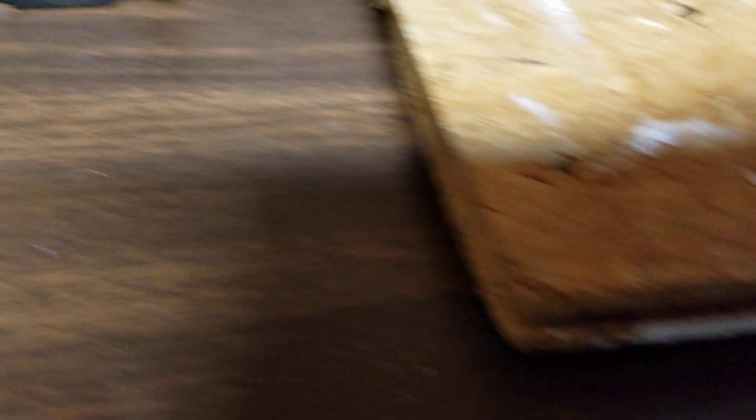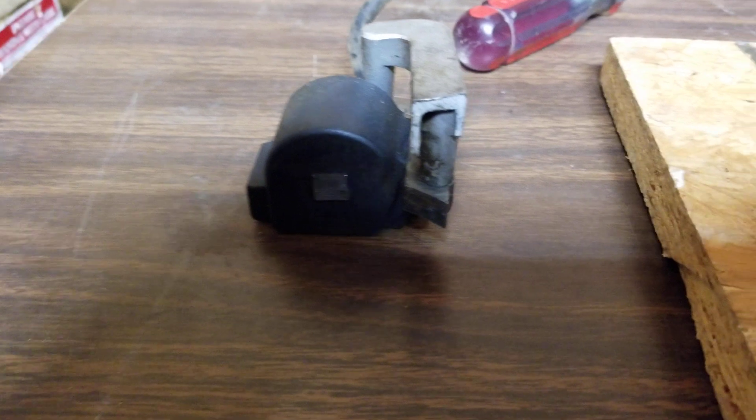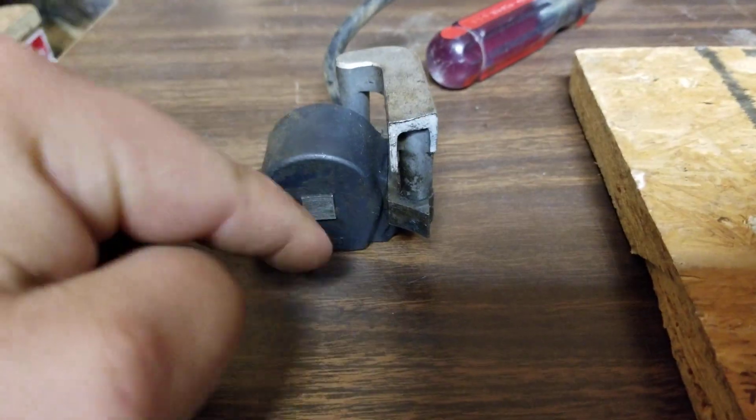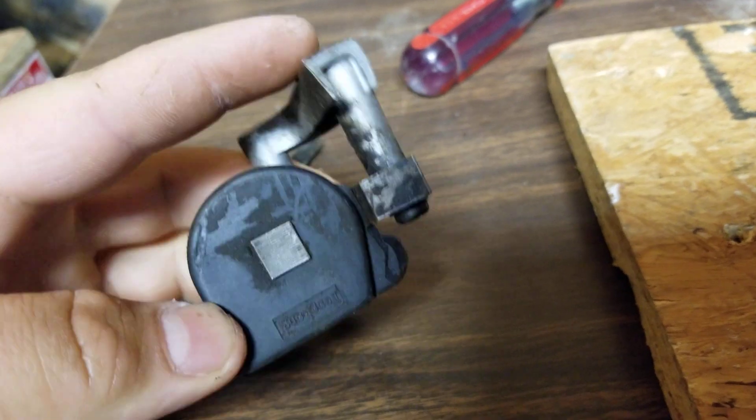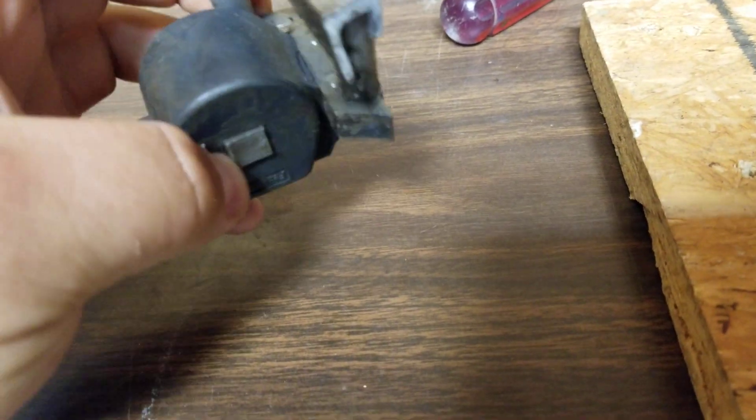There we go. And so if you notice, on an old school traditional ignition coil, it's set up the same way. There's only half of it. It's like half of a transformer. Now this one's broke right here, but that doesn't matter. It'll still work. You can even take this piece off if you want.